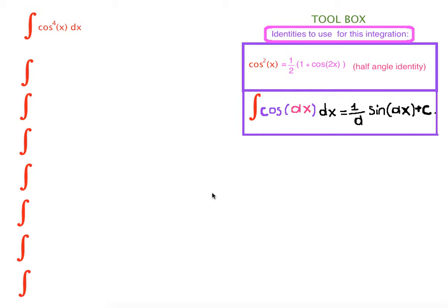Hi everyone, today we're going to learn how to integrate cosine fourth of x dx. Since cosine has even power, we're going to use the half angle identity. Let's begin — as our first step, we're going to break cosine into square form.